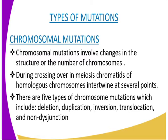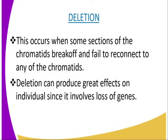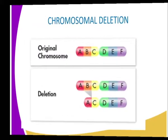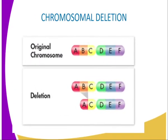There are five types of chromosome mutation, sometimes called chromosome aberrations. They are: deletion, duplication, inversion, translocation, and non-disjunction. Let us discuss each. We are going to start with the first type, which is deletion. This occurs when some sections of the chromatids — as I am explaining, let us look at the following diagrammatic presentation — some sections of the chromatids break off and fail to reconnect to any of the chromatids.